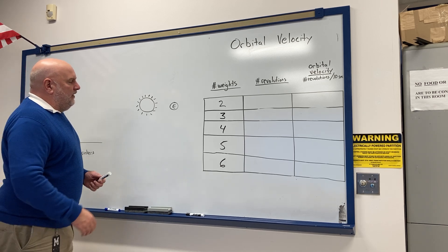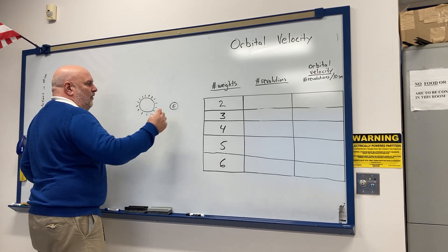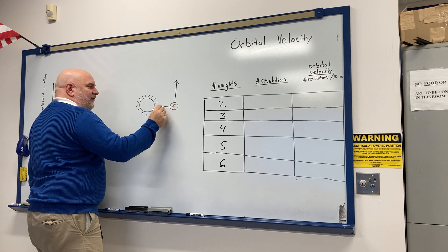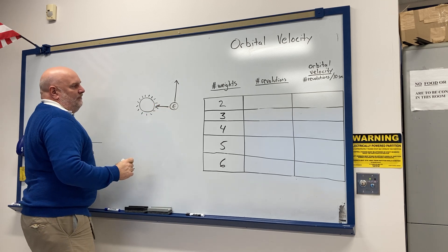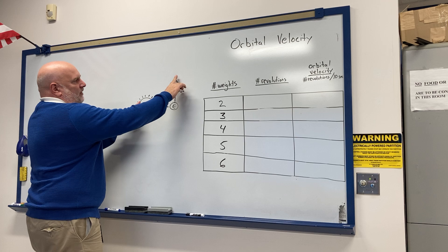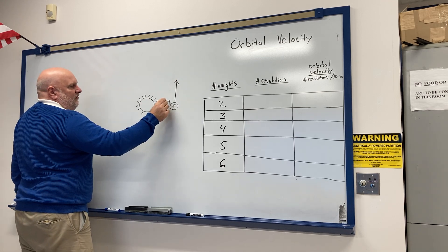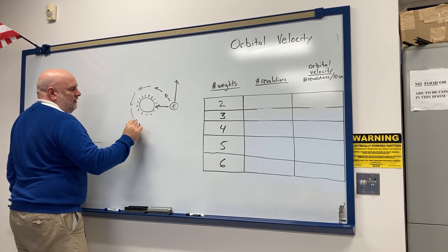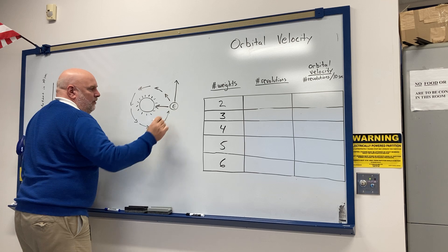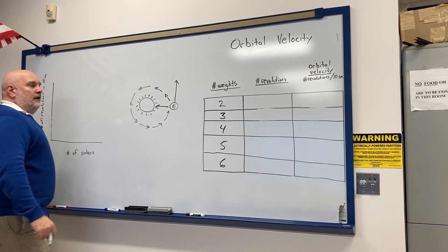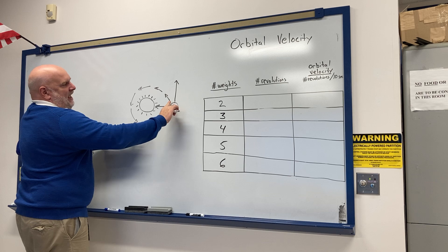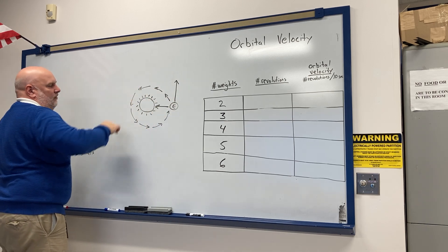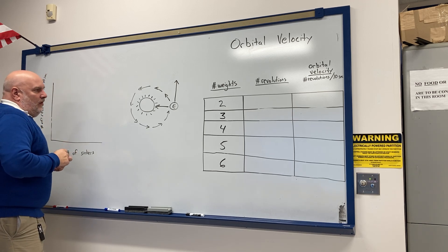The Earth's momentum wants to keep it going in the same direction, while gravity from the Sun pulls it inward. With those two things acting together, what the Earth ends up doing is going in between — which becomes the orbit of the Earth. That path is like the vector of those two forces combined, causing the Earth to go around like that.